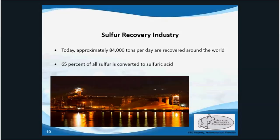Sulfuric acid is used in mining, fertilizers and potash, as well as pulp and paper. The fertilizer industry uses more than half of the sulfur production, converting most of it into sulfuric acid and into process agents such as phosphates, ammonium phosphates, and ammonium sulfate.